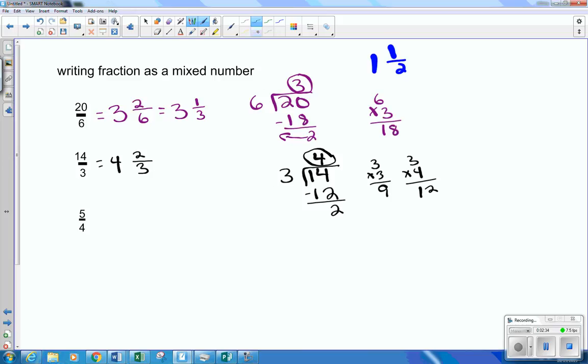All right, last one. So 4 goes into 5. Well, I know 4 goes into 5 one time. 1 times 4 is 4. I'm going to subtract. 5 minus 4 is 1.